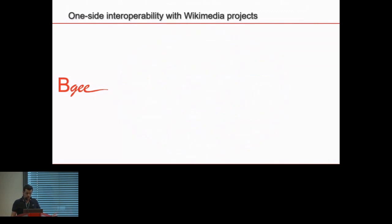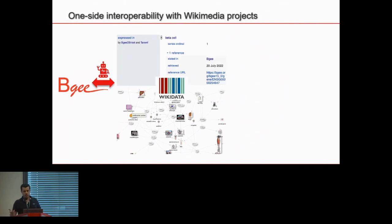An example of one-sided interoperability is what BG is doing with Wikidata. We defined and implemented a bot that fetches data from the BG database and inserts it into Wikidata automatically with each new release of the knowledge base. Wikidata also interoperates with Wikipedia — we developed a sub-model for the gene infobox of each gene article in Wikipedia that fetches the BG information available from Wikidata. To do this, we had to comply with the interoperability procedures in place by Wikimedia projects.